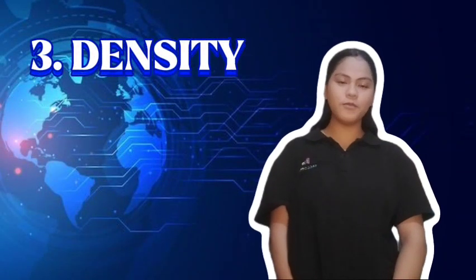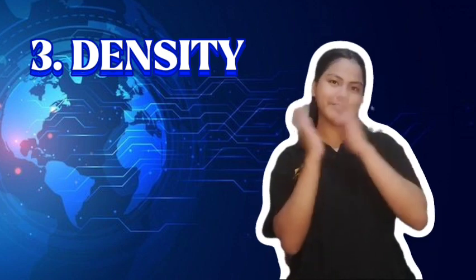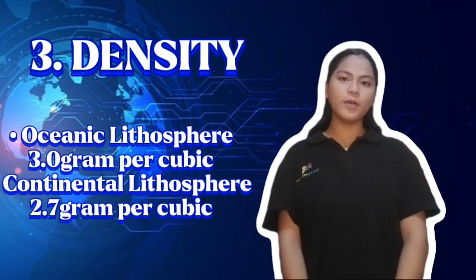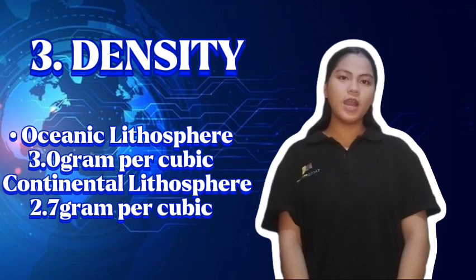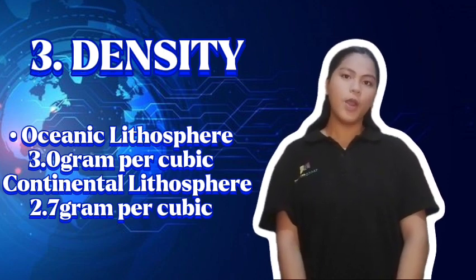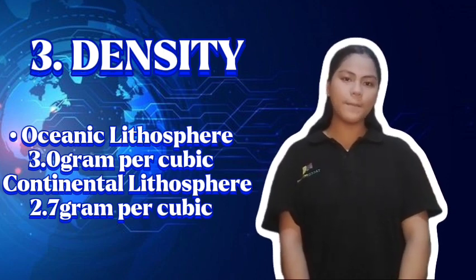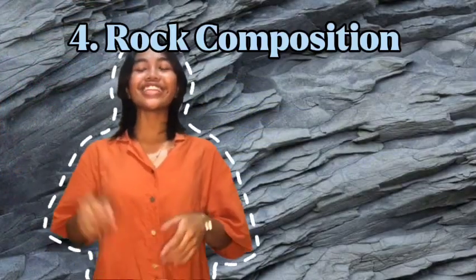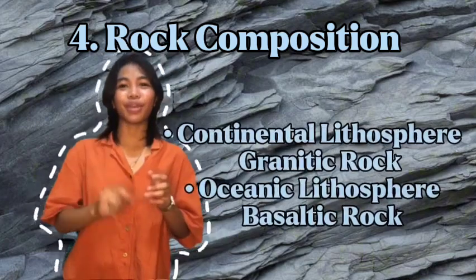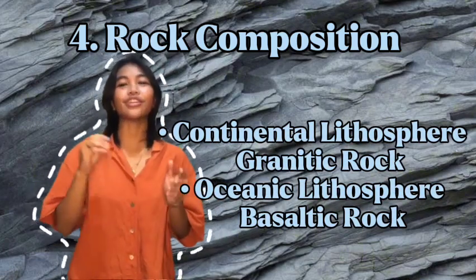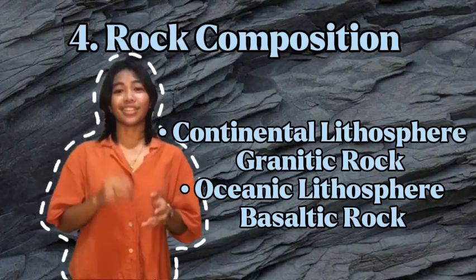Oceanic wins in density! Let's have a clap for Oceanic. Oceanic is more dense than Continental because the density of Oceanic is 3.0 grams per cubic centimeter while Continental is 2.7 grams per cubic centimeter. Rock composition: Continental Lithosphere is made of granitic rock and Oceanic Lithosphere is made of basaltic rock.